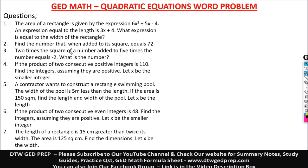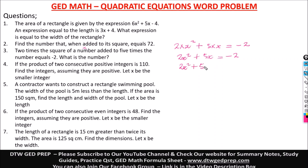Question 3 says: two times the square of a number added to five times the number equals negative two. What is the number? Let the number be x. So 'two times the square of a number' is 2x², 'added to five times the number' is +5x, equals -2. So we have 2x² + 5x = -2. Taking -2 to the left gives us 2x² + 5x + 2 = 0.